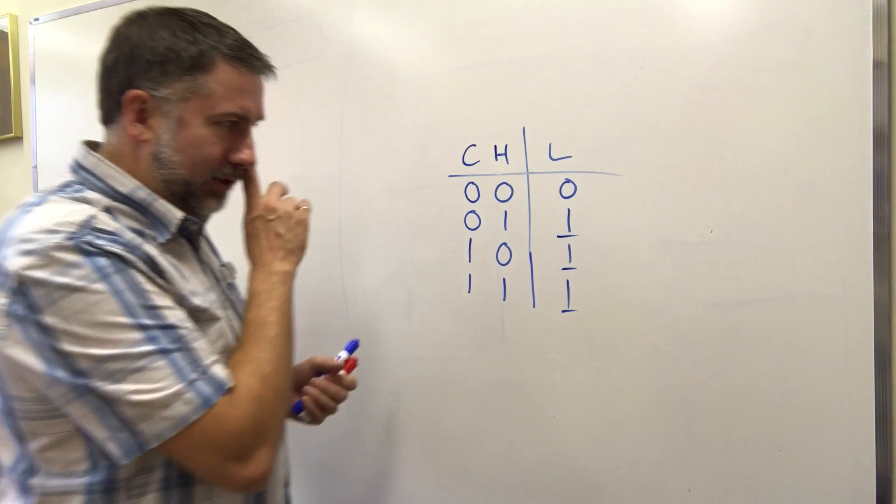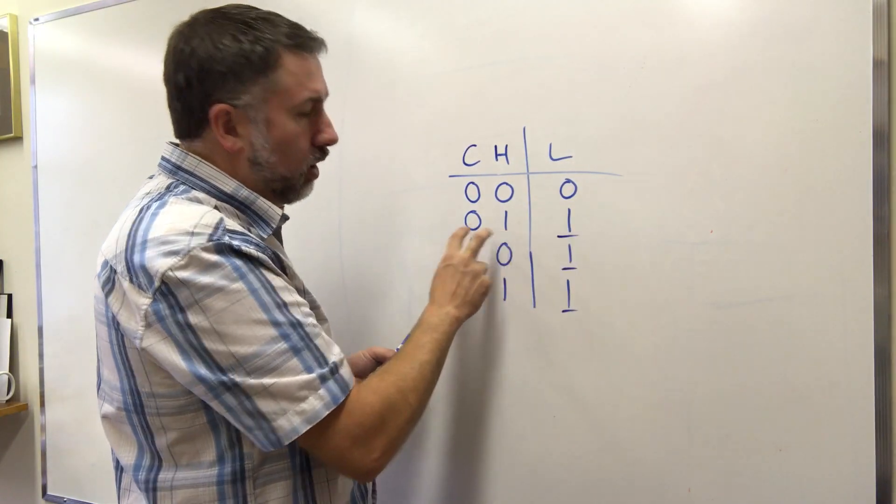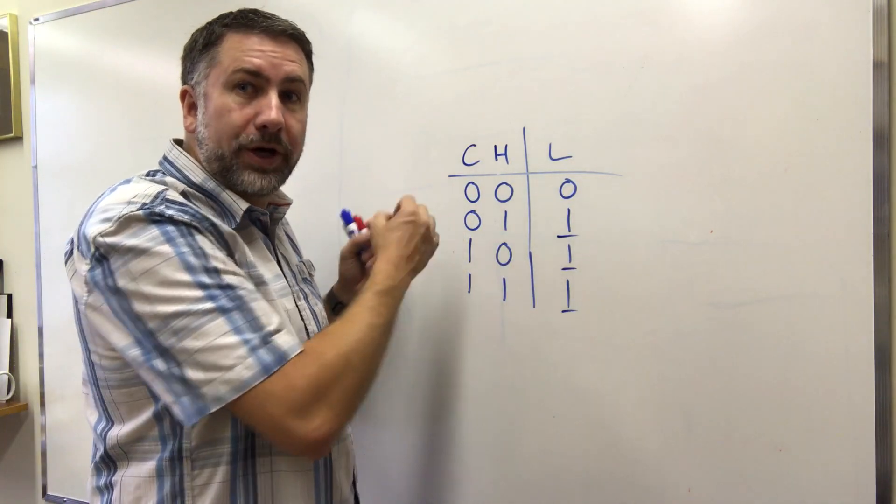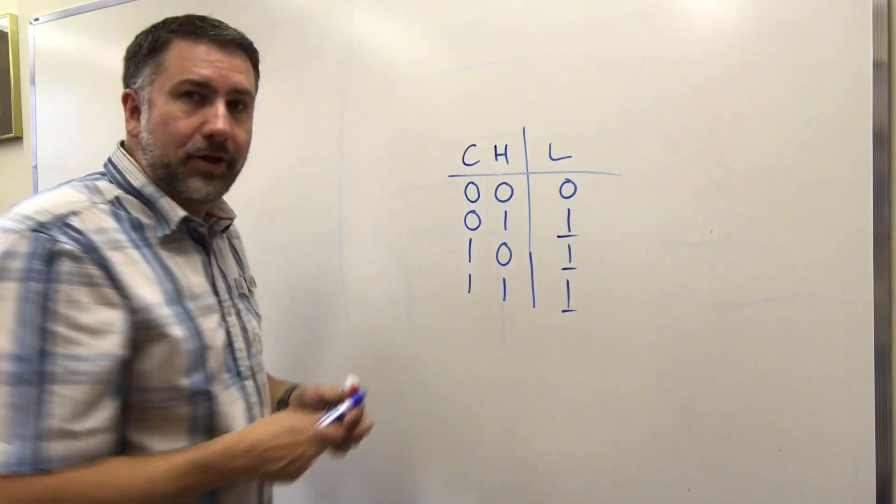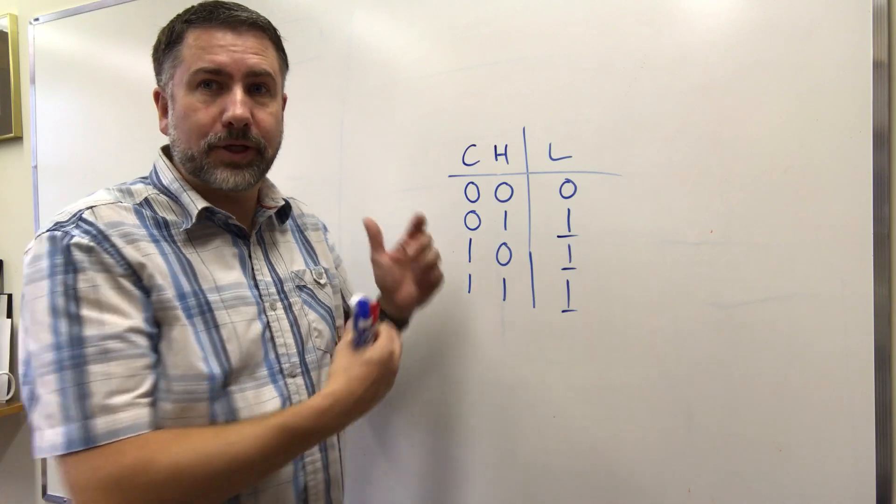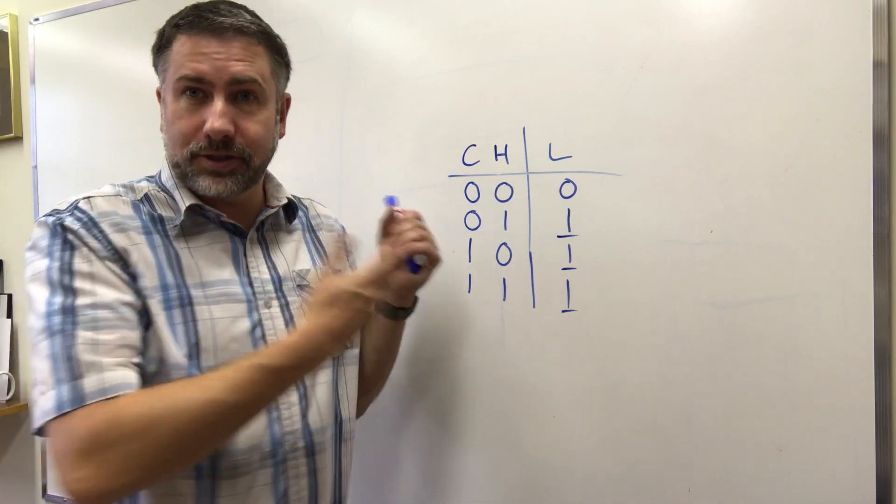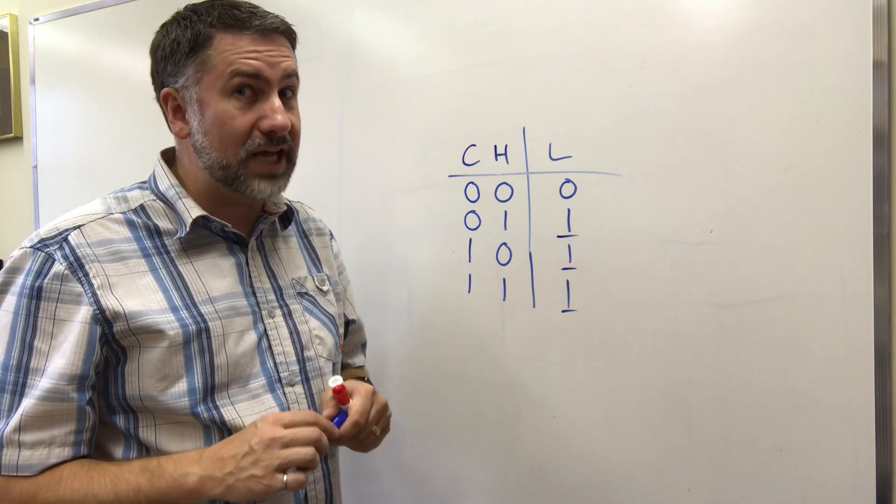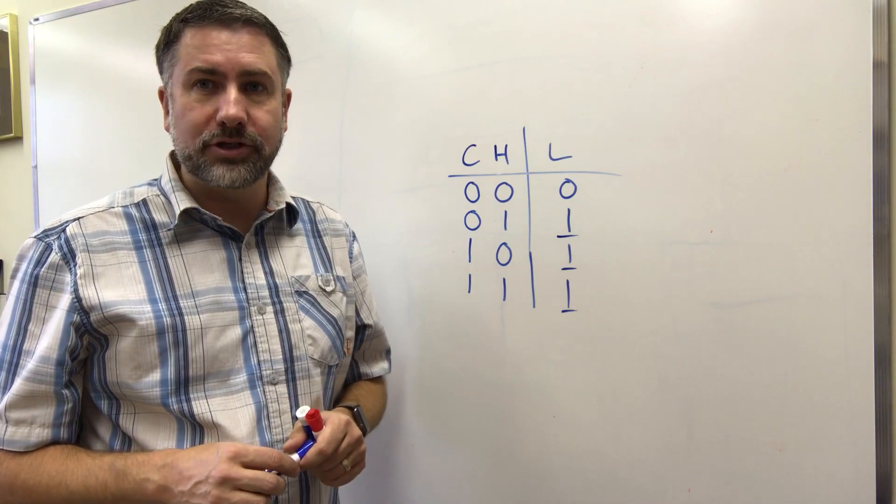And the way we did that was for each one in the truth table, we wrote down a term that indicated what inputs are required to make that happen. This video is going to go through a little bit of terminology that helps us to have shorthand when we're describing this, because this is going to be a common process and we're going to see this happen in far more complicated situations.